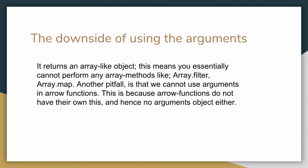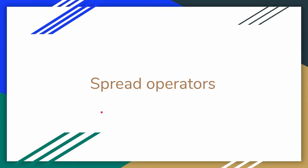Another pitfall is that we also cannot use arguments in arrow functions, because arrow functions do not have their own 'this' object. So now you know how to use rest parameters in JavaScript.